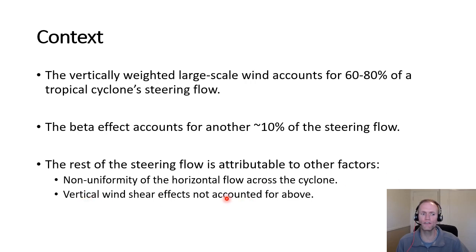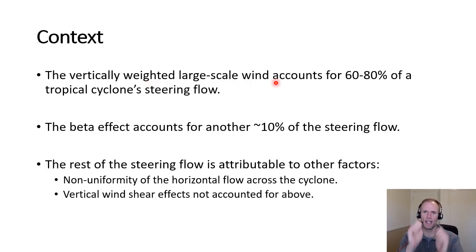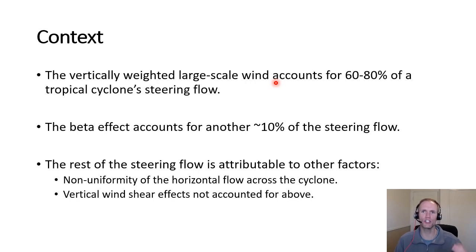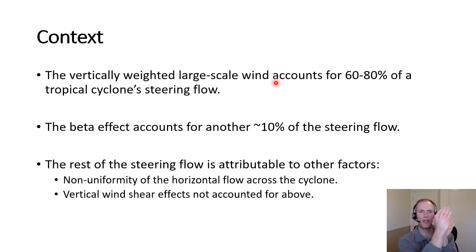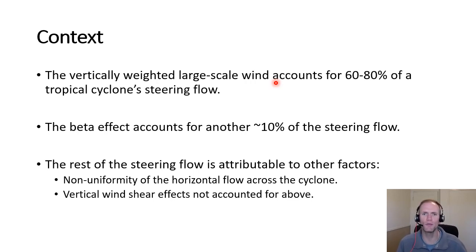We can also consider vertical wind shear effects that have not been accounted for in the vertically weighted large-scale wind. Recall that vertical shear tends to tilt a vortex in one direction or the other, and the induced circulations can lead to rotation or change of that tilt — perhaps from one axis to another or reducing the tilt over time. We'll look at a very similar process in terms of those dynamical effects showing up in tropical cyclone motion.